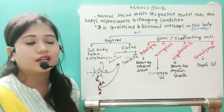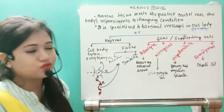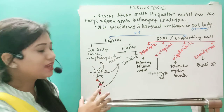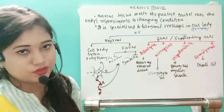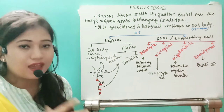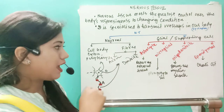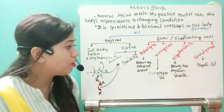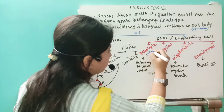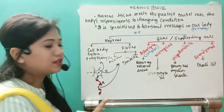Looking at the functions of glial cells: the astrocyte basically assists the neurons. If some neurons die, it helps in repairing the nervous tissue. Astrocyte means star-like cell — 'aster' meaning star. It is the largest glial cell and helps in repairing the nervous tissue.